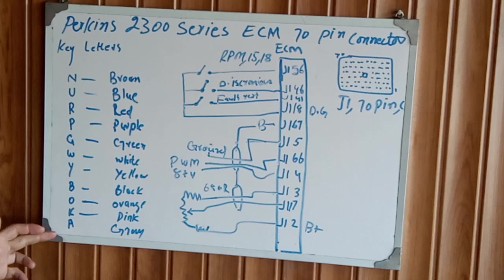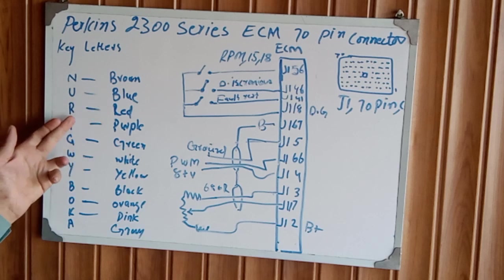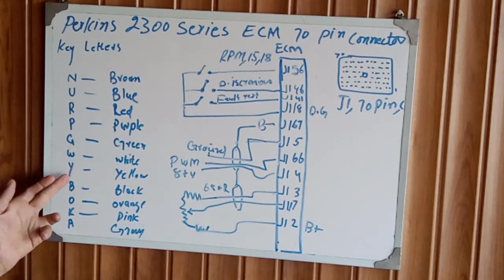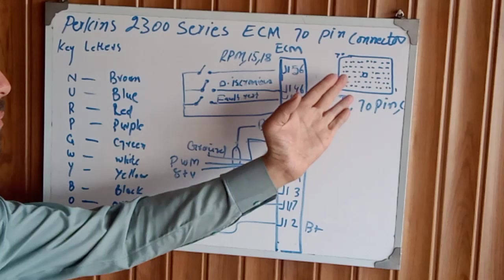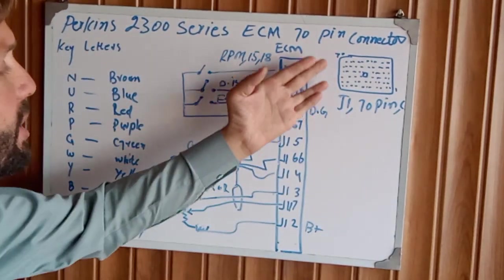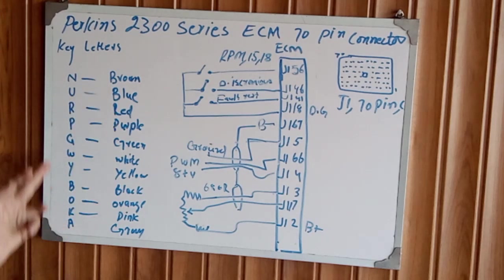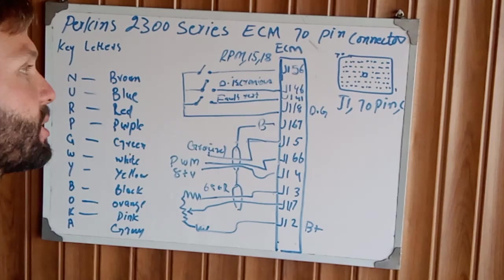This is the key letters I already explained in part 1. A short explanation: N for brown, U for blue, R for red, B for purple, G for green, W for white, Y for yellow, B for black, O for orange, K for pink, A for grey. This ACM wiring comes out from the ACM 70-pin connector. If you want to identify the wiring color codes, note the key letters of the wiring color codes.